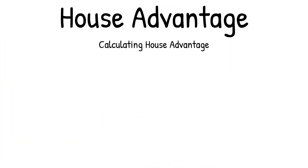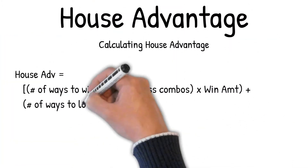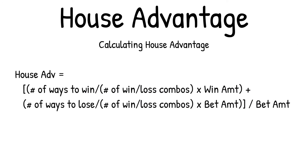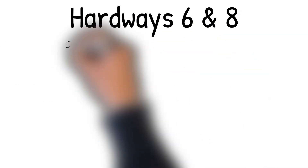Calculating house advantage: house advantage equals the number of ways to win divided by the total combinations of win and loss, times the win amount, plus the number of ways to lose divided by the win-loss combinations times the bet amount — all of that divided by the bet amount.